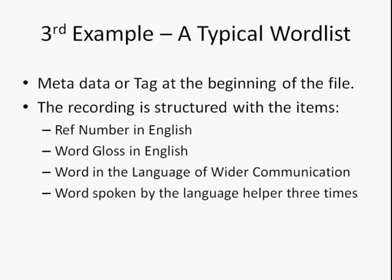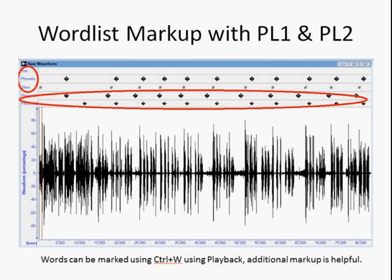This third example is a little more typical and complex. In a typical word list, there's some metadata or a tag at the beginning of the file. The recording is structured: there's a reference number, a word gloss, and then the word is spoken in the language of wider communication. The language helper then pronounces the word in his language three times. So there is typically the reference, phonetic, and gloss available for markup.